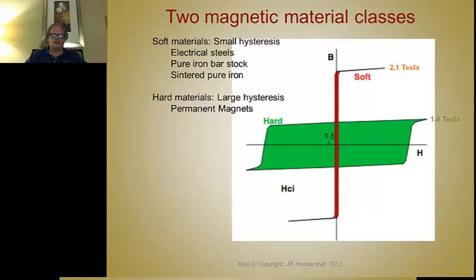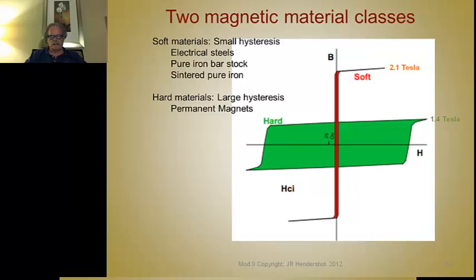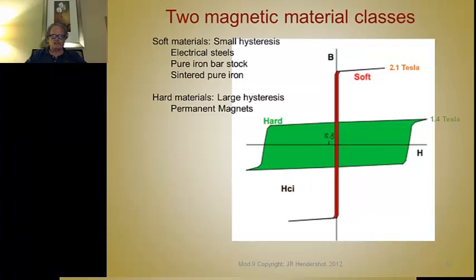We have the vertical axis B — that's the magnetic flux density in the material — and the horizontal axis is the H axis in Oersteds. That's the axis where you apply an external field to magnetize or demagnetize the magnetic material. You can see there are two different shapes here. The soft materials — that's the one that stands up like a pogo stick in red — it has a very narrow hysteresis band.